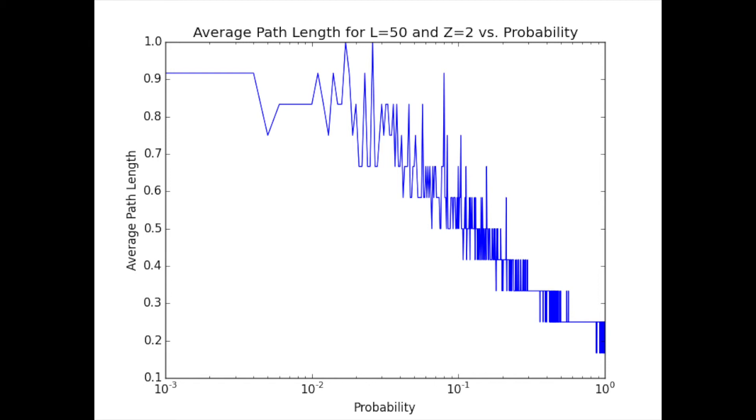For low probabilities, the average path length is near 1 and then drops to 1 twelfth for a probability of 1. Note that the graph is fixed at 1 for small p, since there aren't many shortcuts.